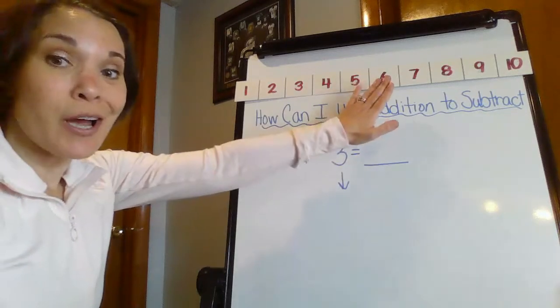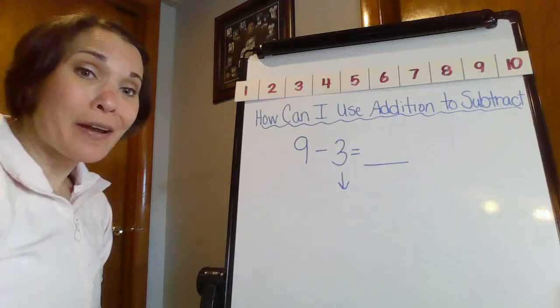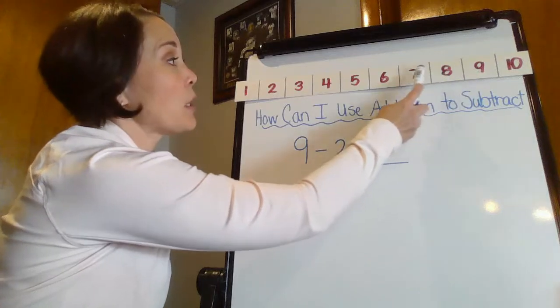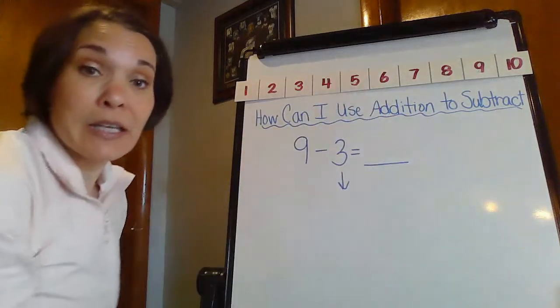I could also use a number line. I could count back on a number line. So I could start at the 9 and I could count back 3: 1, 2, 3. See, I still end up on 6.